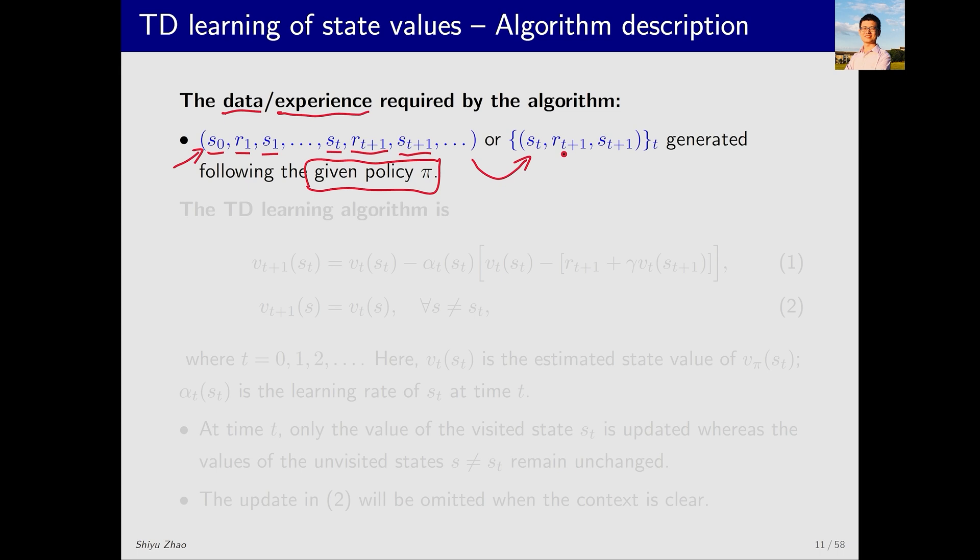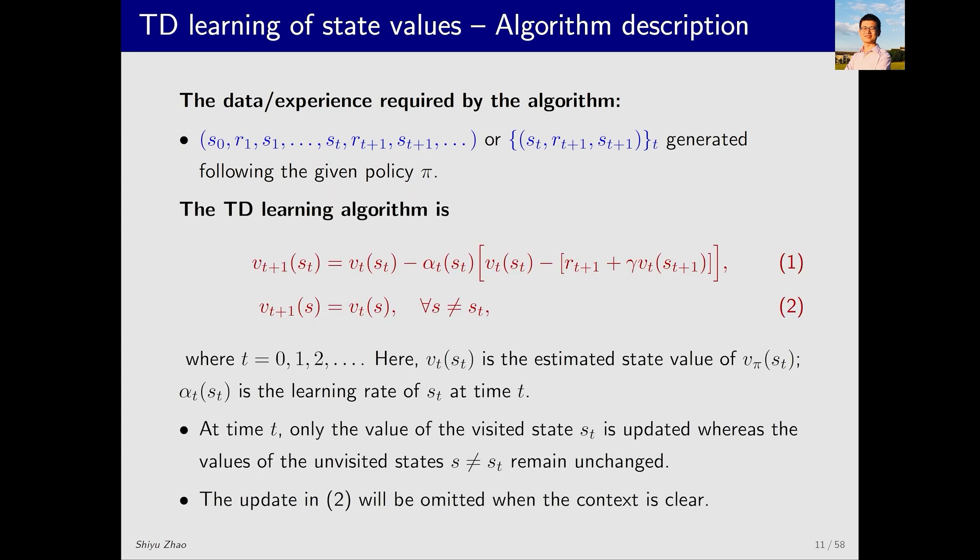So, what does the TD algorithm do with this data? It estimates the state value of policy pi. This is the expression of the TD algorithm. Now let me explain in detail. There is a symbol, v_s. What is s? It is any state in the state space. For every state in the state space, there is a corresponding V. This V approximates V_pi(s), which is the state value of s.